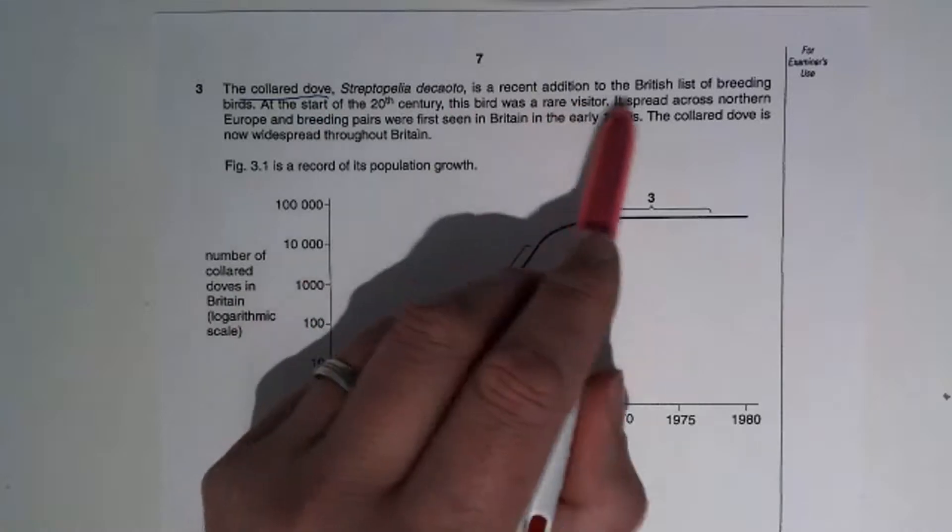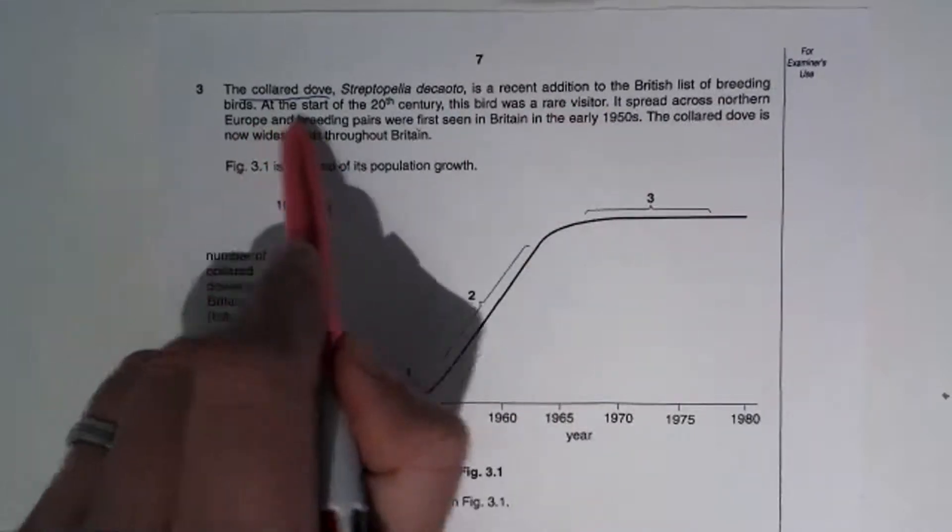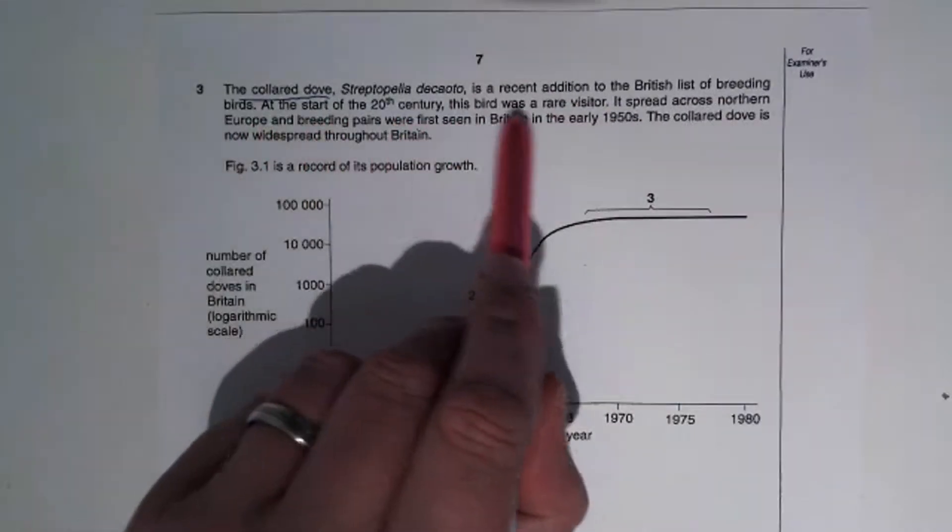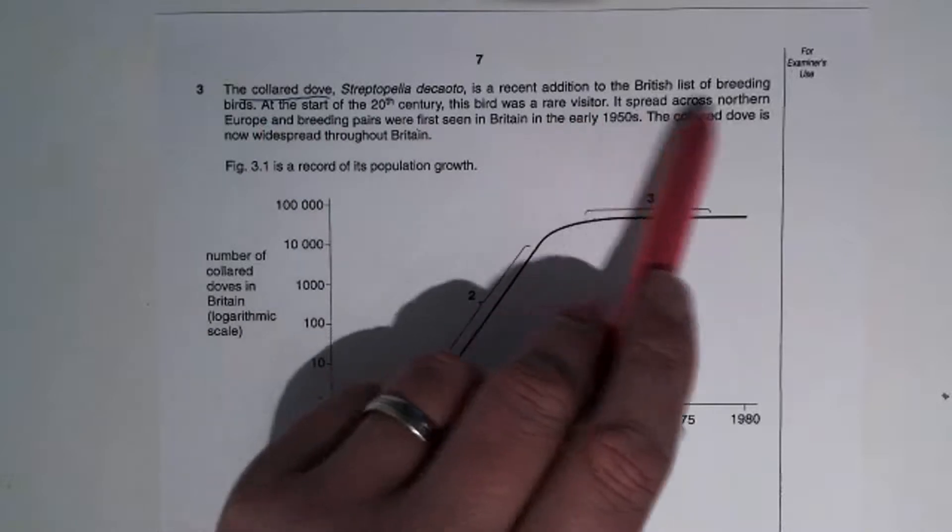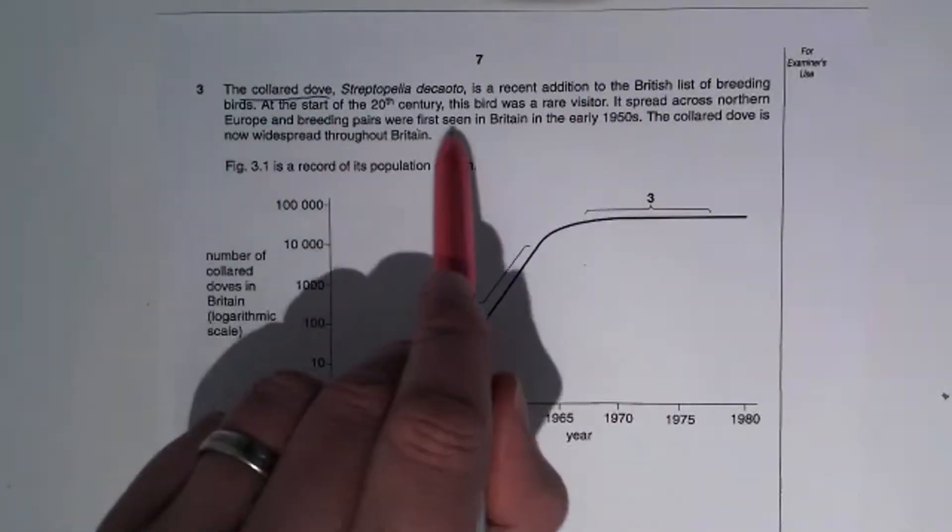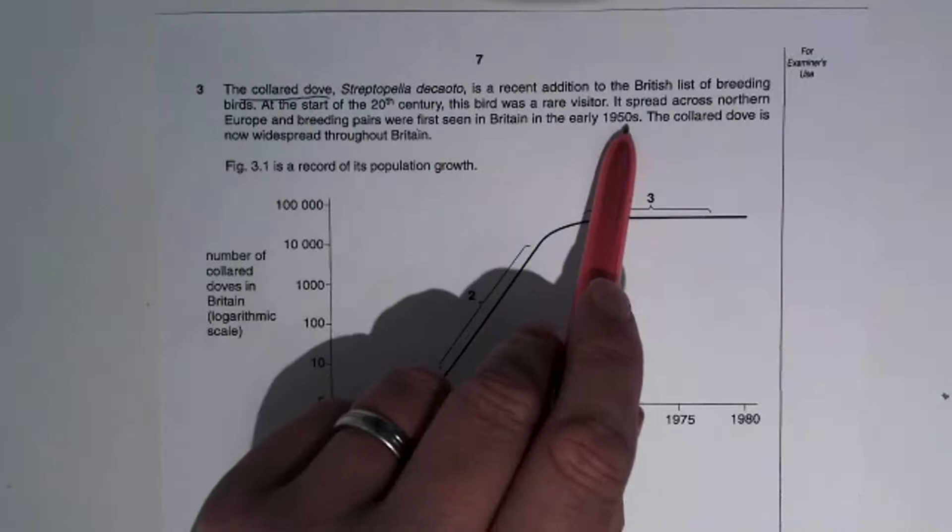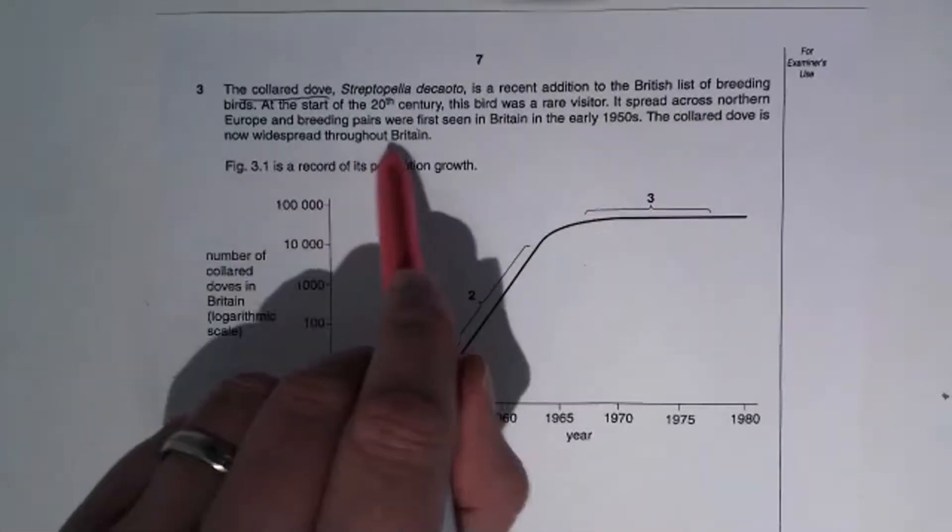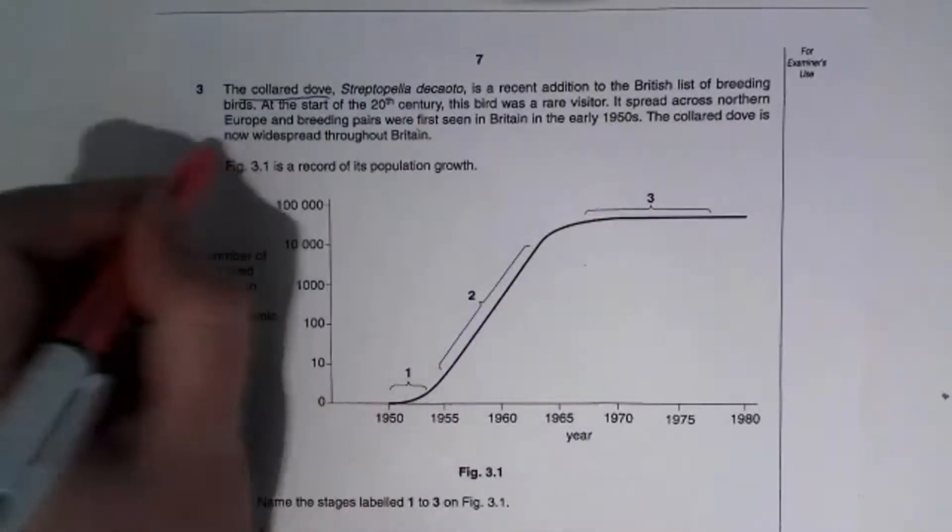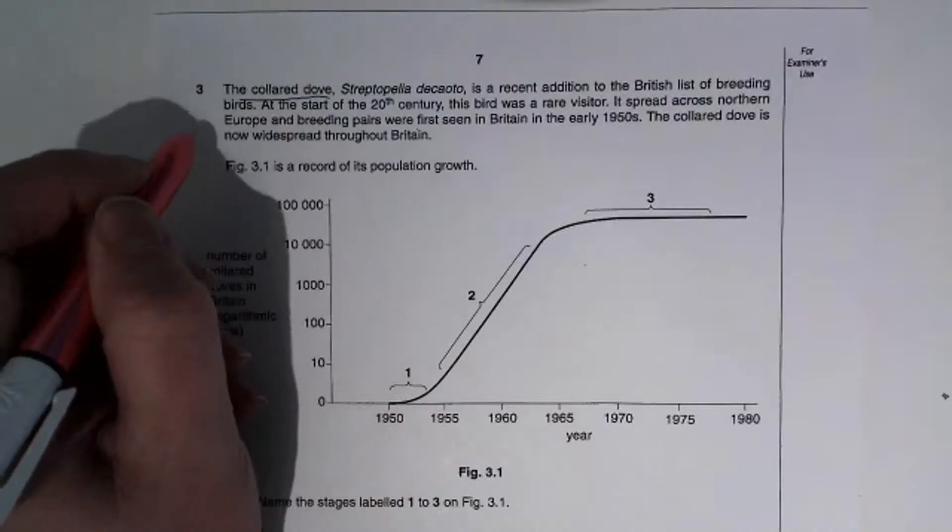It says in recent addition to the British list of breeding birds, at the start of the 20th century this bird was a rare visitor. It spread across northern Europe and breeding pairs were first seen in Britain in the early 1950s. The collared dove is now widespread throughout Britain. So that's just some basic information about it.